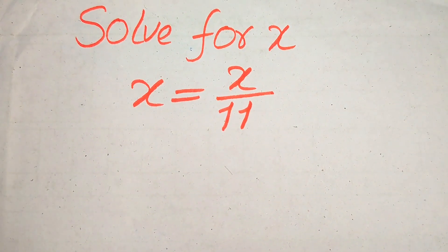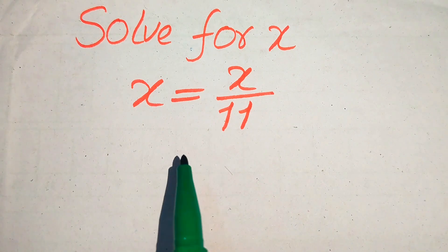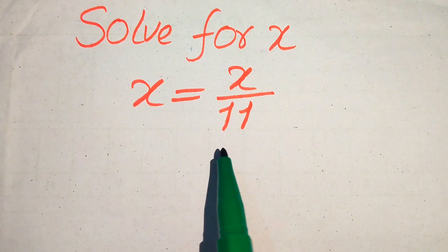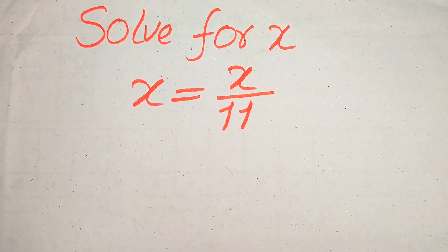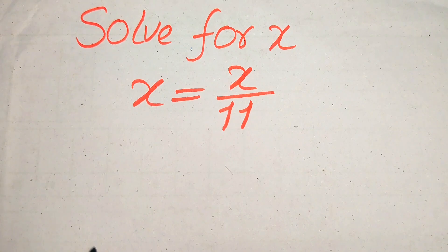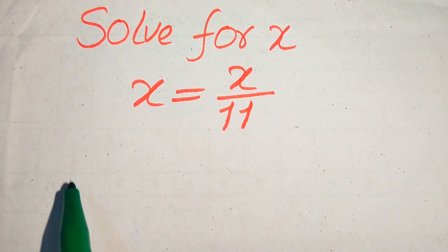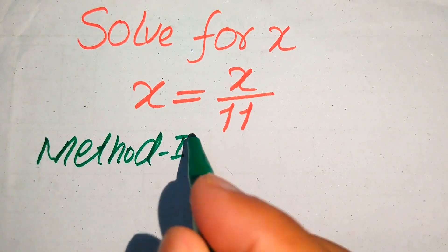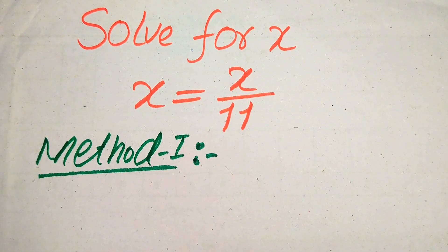Hello everyone. How to solve this problem for the values of x if we have x equals x divided by 11. First we find all the roots of this equation, and at the last we will verify which of the roots are solutions and which are extraneous roots. I can also explain the difference between solution and extraneous root at the end of this video, so please watch the complete video. I can solve this problem using two methods.